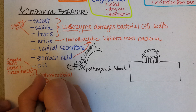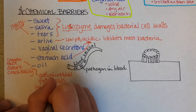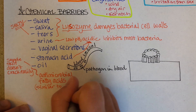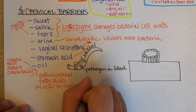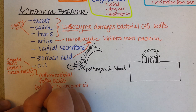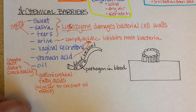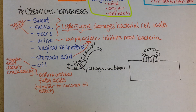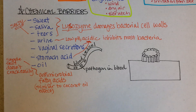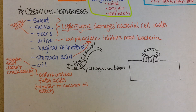This is similar to coconut oil, which is often recommended for use on skin to fight fungal infections. Fats have some antimicrobial properties. We'll take a break here and come back to look at a couple of other innate immune defenses.